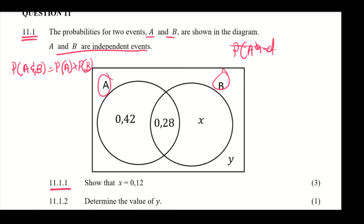We want to find the value of X, so we need to identify P(A and B). Looking at the diagram, it is the intersection, so P(A and B) equals 0.28.